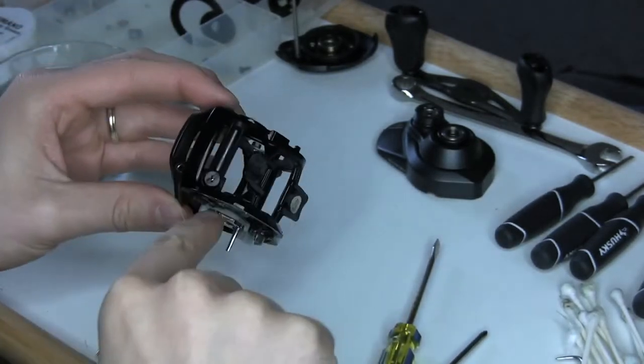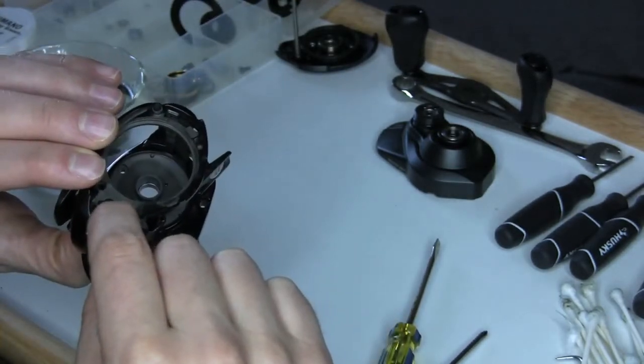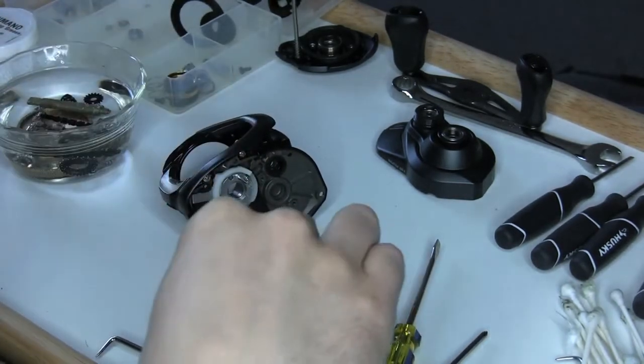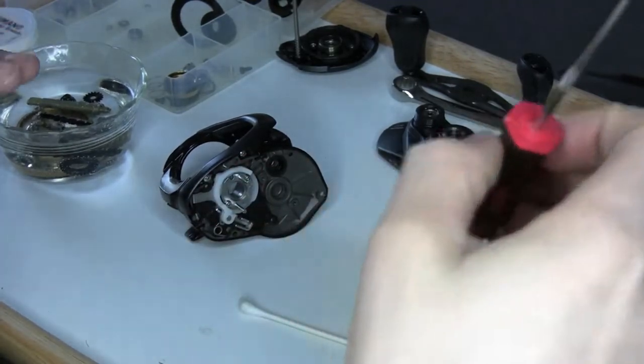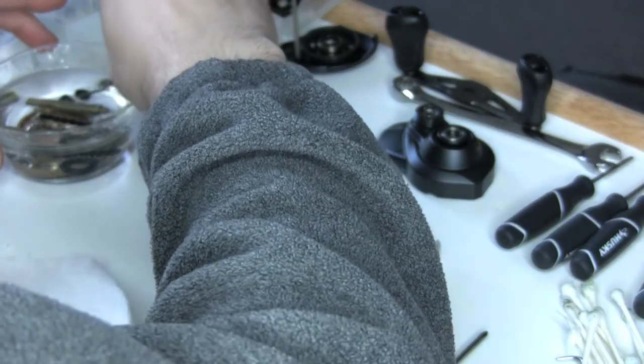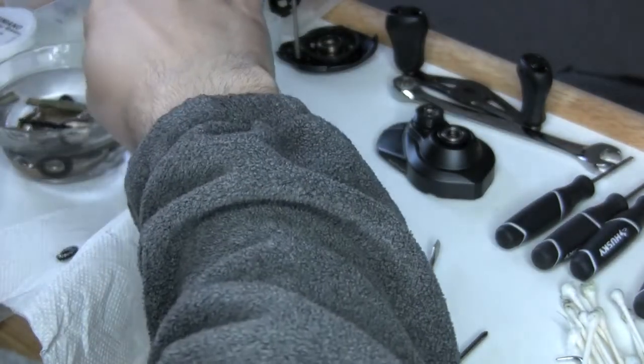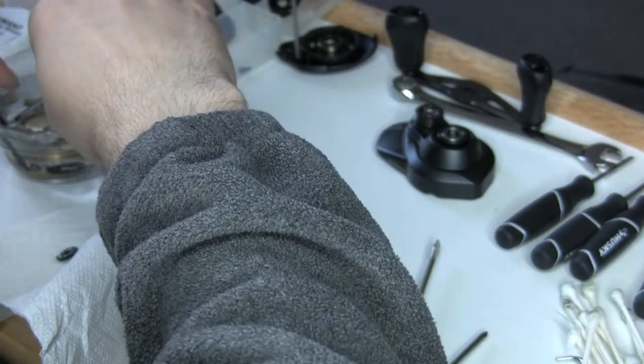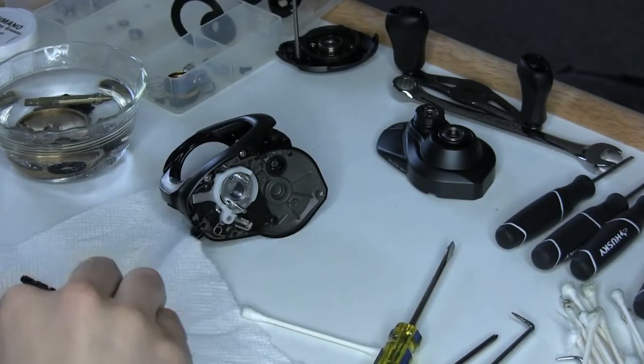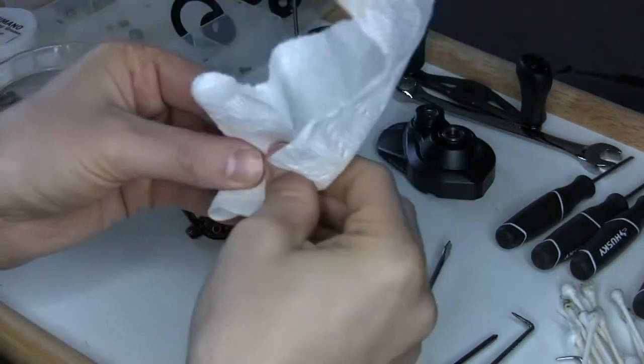So the first thing you're going to want to do is make sure that this housing is installed flush here. And now I'm going to remove some of my pieces for that worm gear from the rubbing alcohol. I've got my gear here, I have a paper towel, I'm going to put that on my paper towel, take out the gear itself, and I'm just going to start drying off those pieces by hand with the paper towel.